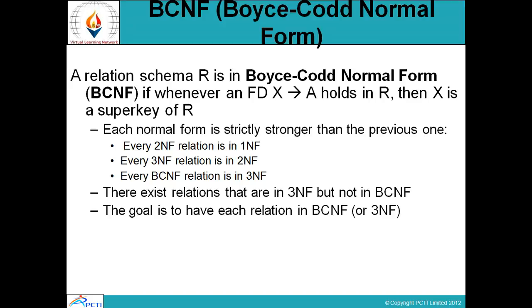A relation schema R is in BCNF if whenever a functional dependency X tends to A holds in relation R, then X is a super key of R. Each normal form is strictly stronger than the previous one: every second normal form relation is in first normal form, every third normal form relation is in second normal form, and every BCNF relation is in third normal form.